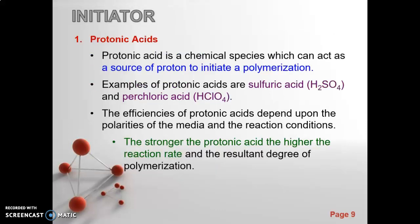First, we will look at protonic acids. What is protonic acid? It is a chemical species which can act as a source of proton to initiate a polymerization. Examples of protonic acids are sulfuric acid H2SO4 and perchloric acid HClO4. It has a source of proton, H+. The efficiencies of protonic acids depend upon the polarities of the media and the reaction conditions.